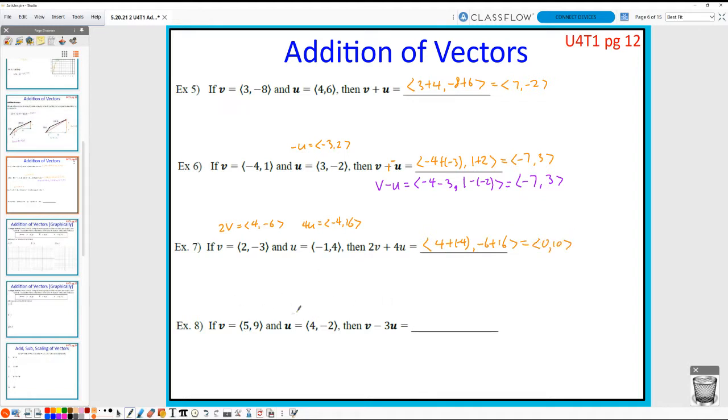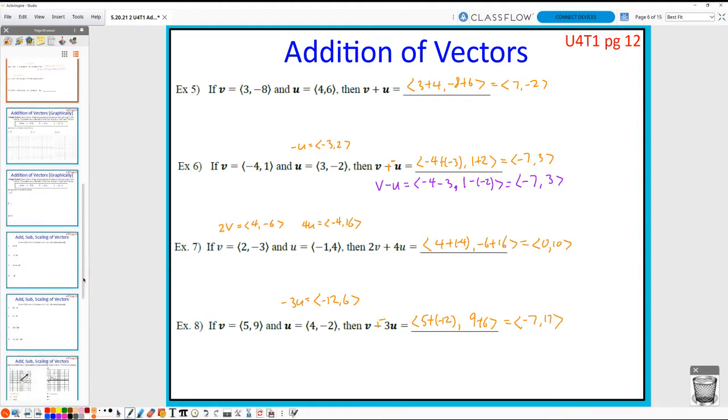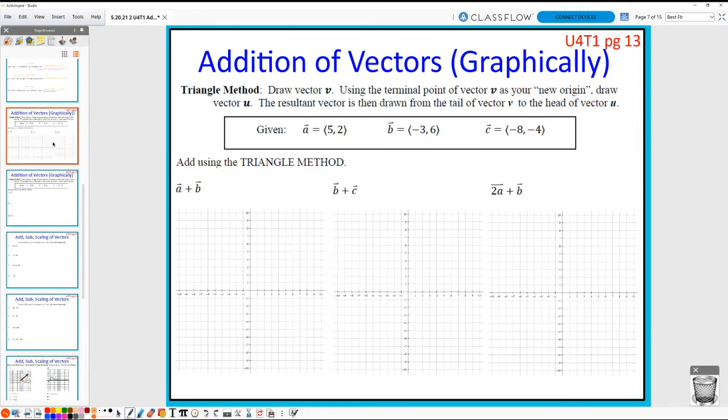Last but not least, again, for me personally, I like to think of this as adding a negative. So, -3U is equal to <-12, 6>. So, here, what I'm going to do is 5 plus a -12, comma, 9 plus 6. So, this is going to equal to <-7, 17>. And if you want to do it the other way, that's fine. If you would like to do that, I'll leave that up to you.